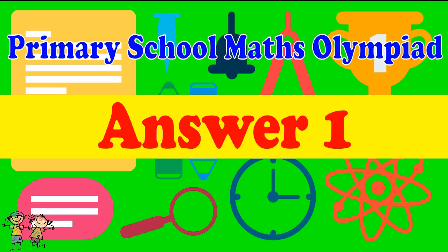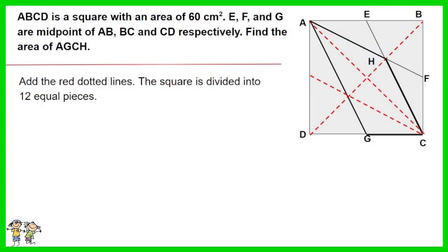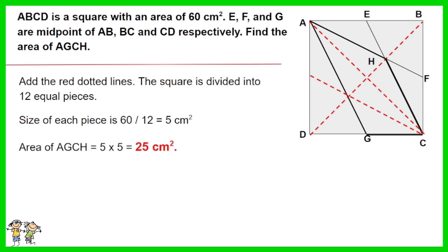Answer for Question 1. At the red dotted lines, the square is divided into 12 equal pieces. The size of each piece is 60 divided by 12, which is 5 cm². Thus the area of AGCH equals 5 times 5, which equals 25 cm².